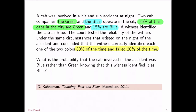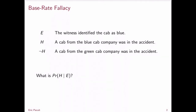Roughly what probability would you assign to the cab being blue? Now, in order to solve this problem formally, we need to apply Bayes' theorem. To do Bayes' theorem, we need to know what is the evidence and what's the hypothesis. So the evidence is that the witness identified the cab as being blue. The hypothesis is that a cab from the blue cab company was involved in the accident. Not-H then is that a cab from the green cab company was involved in the accident.